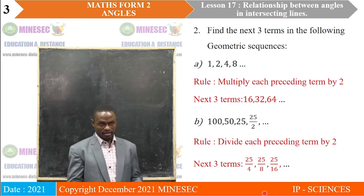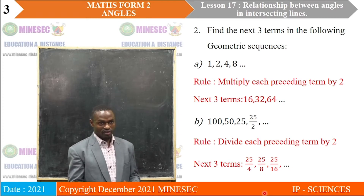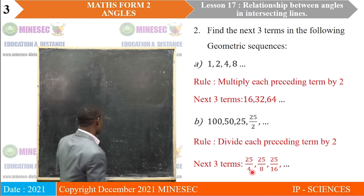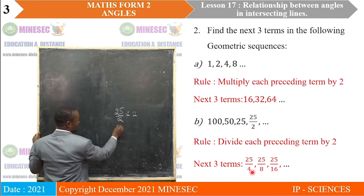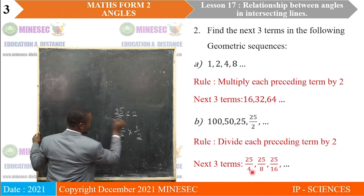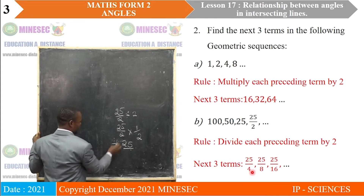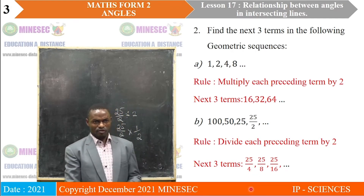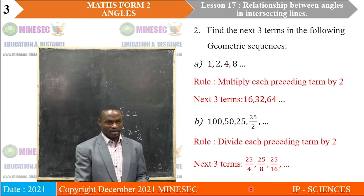The next three terms will be: divide 25 over 2 by 2, which is the same as taking 25 over 2 and multiplying by 1 over 2, giving 25 over 4. Dividing 25 over 4 by 2, we obtain 25 over 8. Dividing 25 over 8 by 2, we obtain 25 over 16. And we get the next three terms as required.